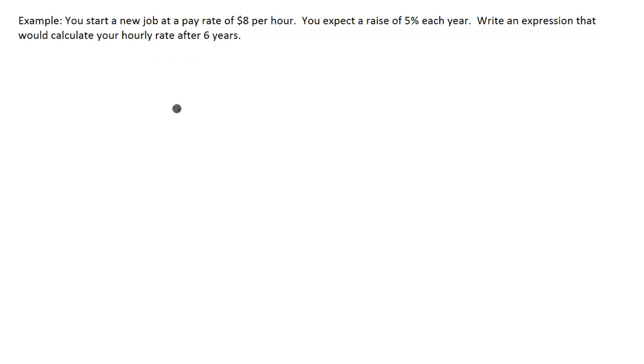So if we want to figure out what 5% of $8 is, we're going to take $8 and then multiply it by 0.05 because that's the decimal version of 5%. So if we go ahead and do this multiplication, we're going to get 0.04. That means that 5% of $8 is going to be $0.04.